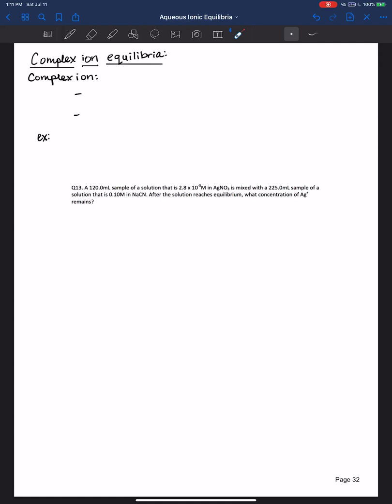But first, what is a complex ion? Well, a complex ion has a central metal ion that is bound to one or more ligands.